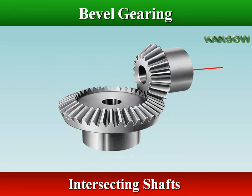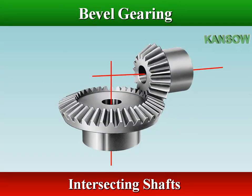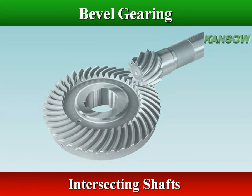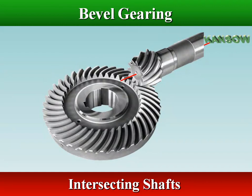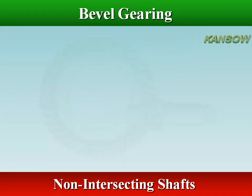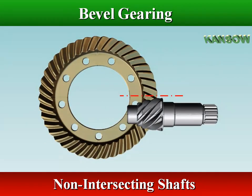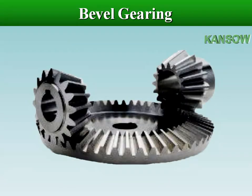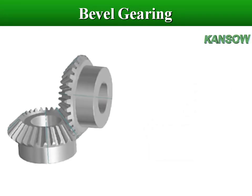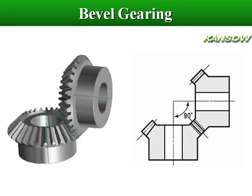Bevel gears are used to transmit power between two non-parallel shafts. The shafts may be intersecting or non-intersecting. Bevel gears are usually mounted on shafts that are 90 degrees apart, but can be designed to work at other angles as well.